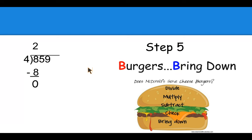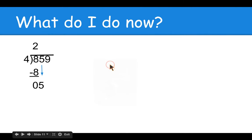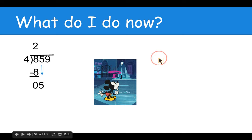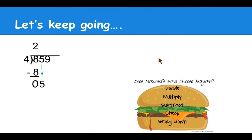Step five, B burgers bring down. We're going to bring down the next place in the place value, which is the tens place. We'll bring down the five, put it next to the zero. But what do you do now? We've already done all five steps. That's simple. We just start right back over again with does McDonald's serve cheeseburgers. So let's keep on going.